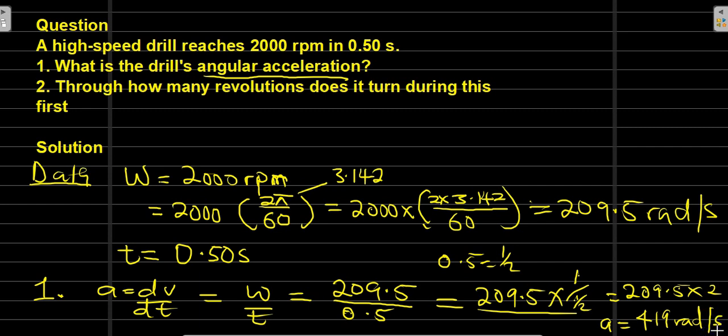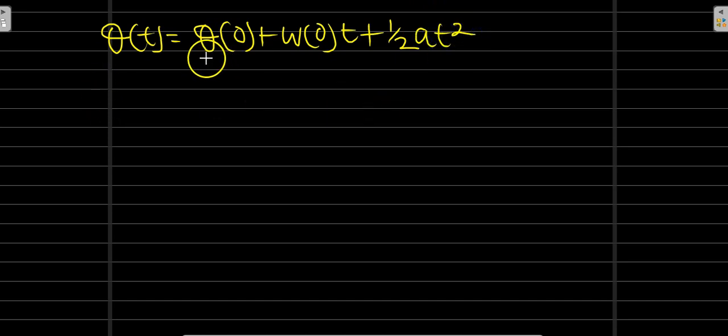The next thing we need to do now is to find how many revolutions does it require. To find the number of revolutions we will use the formula: theta of t equals theta of 0 plus omega of 0 times t plus one-half a t squared.